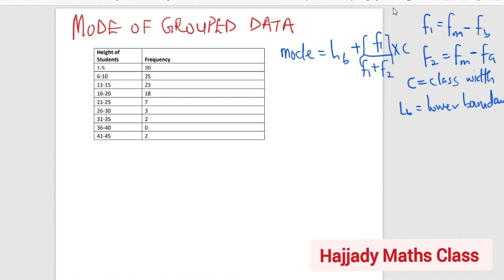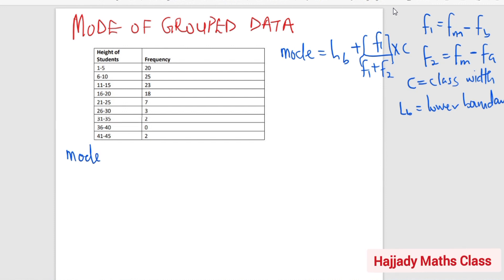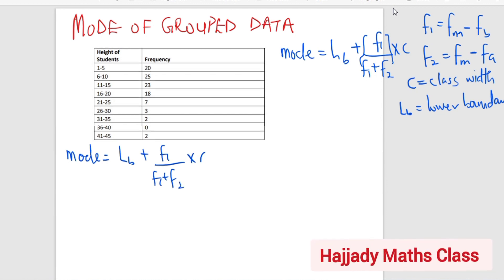So these are the parameters that we have. Now, we are going to use this to compute the information given to us there. Now, for us to do this, we are making use of the same formula here. We have that our mode equals LB plus F1 over F1 plus F2 multiplied by C. So with this, our lower boundary, the first thing we are going to look at is to determine our modal class.